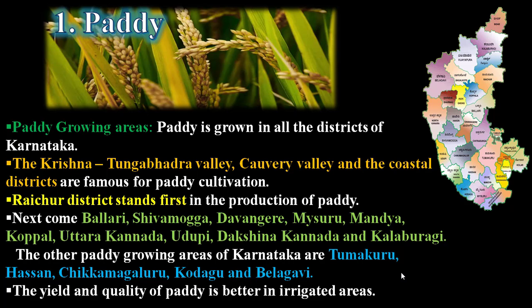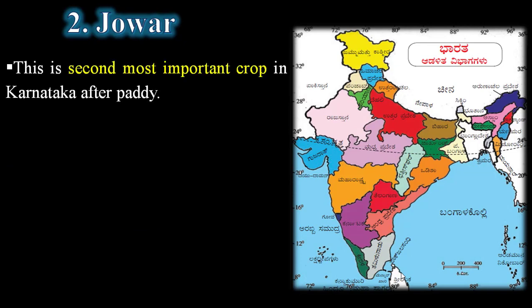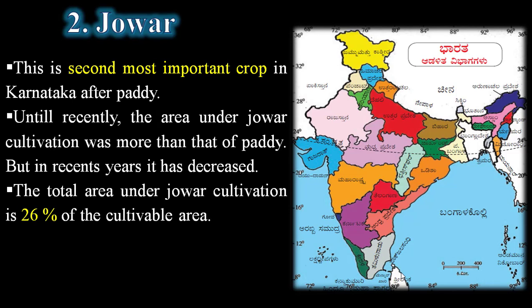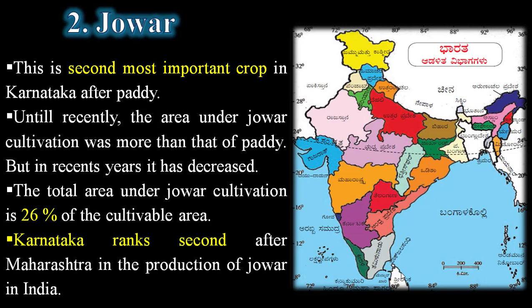The second major food crop of Karnataka is jowar. Jowar is the second most important crop after paddy. Until recently the area under jowar cultivation was more than that of paddy, but in recent years it has decreased. The total area under jowar cultivation is 26 percent of the cultivatable area.